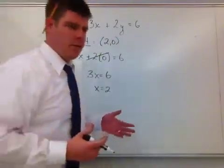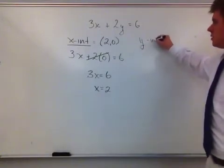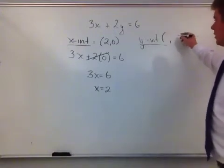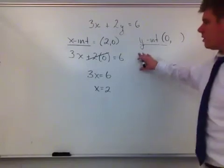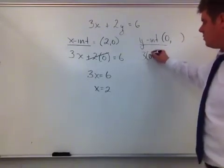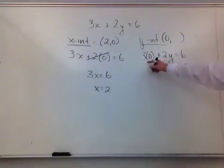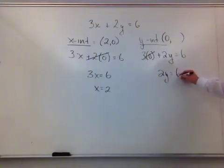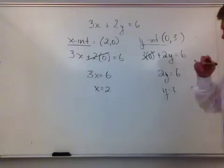Same idea with the y-intercept. So, the y-intercept happens to be when I take a look at these coordinates, it's when x is 0. So, when x is 0, I'm going to come up here. So, this is now 3(0) + 2y = 6. Well, 3 times 0 is 0. So, now I'm left with 2y = 6. Divide both sides by 2, and y = 3. So, when I go back up to my coordinates, I get (0,3).